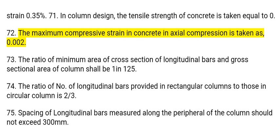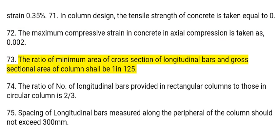72. The maximum compressive strain in concrete in axial compression is taken as 0.002. 73. The ratio of minimum area of cross-section of longitudinal bars to the cross-sectional area of a column shall be 1.125%.